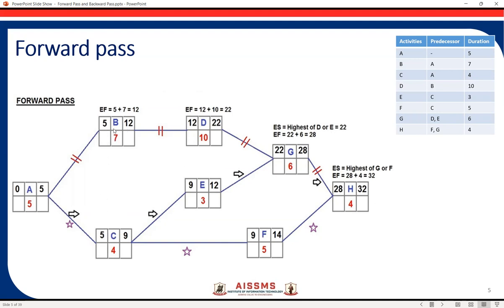Now we need to calculate the early finish. For B: five plus duration seven equals twelve, so the early finish for activity B is day 12. For C: early start five plus duration four equals nine. So activity C can be finished at earliest by day nine.